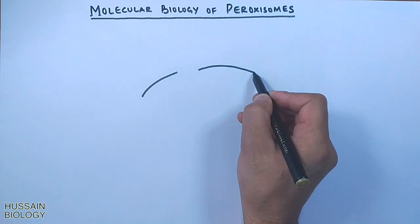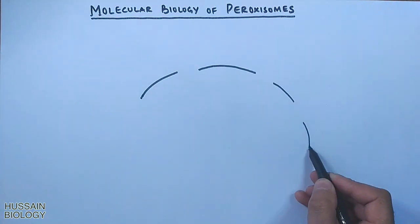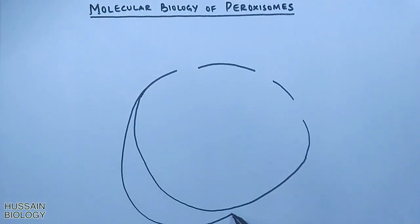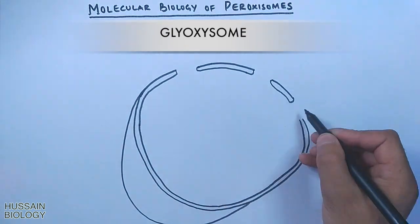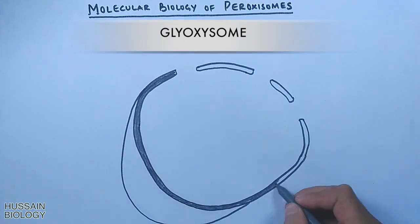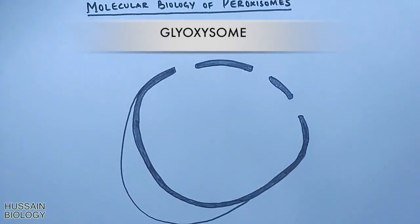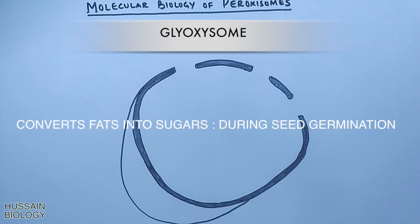Moreover, there are some specialized peroxisomes called glyoxysomes. These specialized peroxisomes are found in the fat-storing tissues of plant seeds, and they contain enzymes that initiate the conversion of fatty acids to sugar.